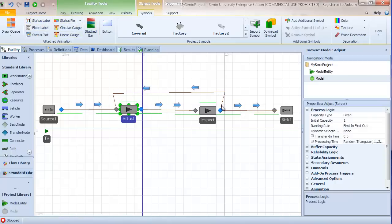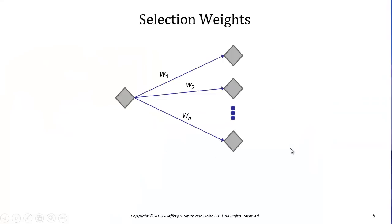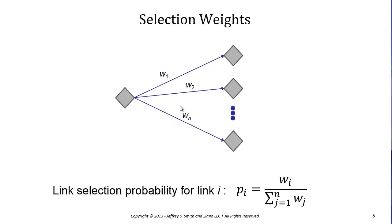The question now is how do we handle the split — the failure probability we said was 20%. In Simio, when we have a node with multiple links emanating from it, Simio uses selection weights to compute the probability that an entity will take each link. Specifically, the probability of selecting link i is equal to the weight of link i divided by the sum of all weights — it computes a weighted proportion to determine the probability for each individual link.